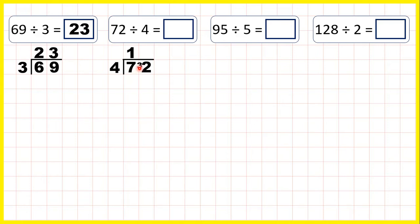So now we have 32 divided by 4, which is 8, because 8 times 4 is 32. So our answer is 18.